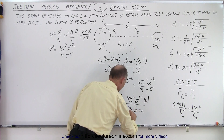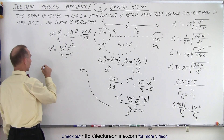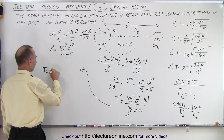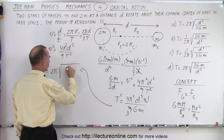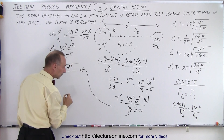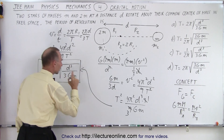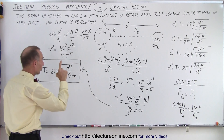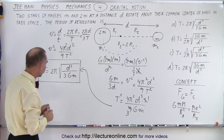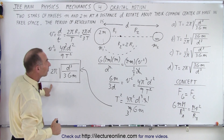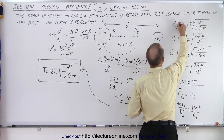We have a three in the numerator and a nine in the denominator, which simplifies. Taking the square root of both sides, the period T equals 2π times the square root of d³ divided by 3Gm. That is the period of the large object, which is also the period of the small object — we could have chosen the small object and gotten the same result. The correct answer is A.